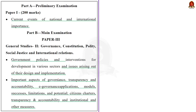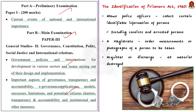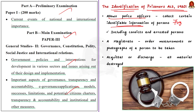The syllabus relevant to this news article is highlighted here for your reference. The Identification of Prisoners Act 1920 allows police officers to collect certain identifiable information like fingerprints and footprints of persons including convicts and arrested persons. A magistrate may also order measurements or photographs of a person to be taken to aid the investigation of an offense.